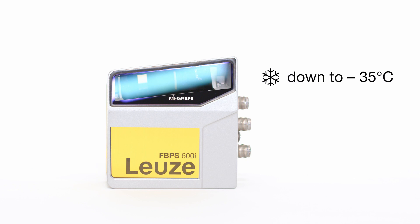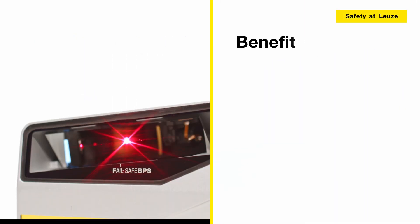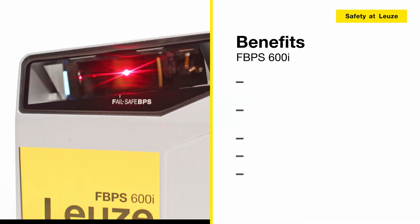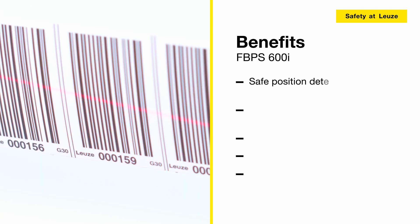Safe barcode positioning system FBPS 600i: for safe position detection with just one device up to performance level E.